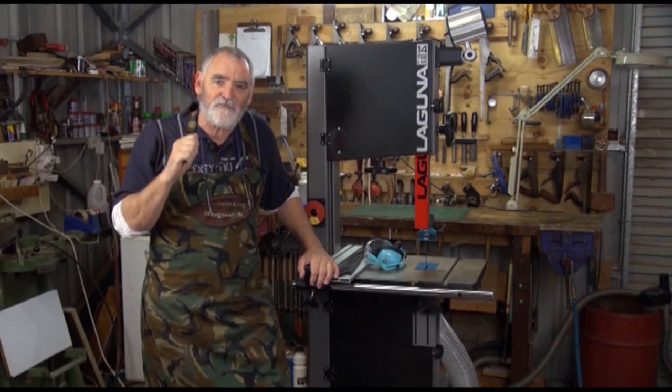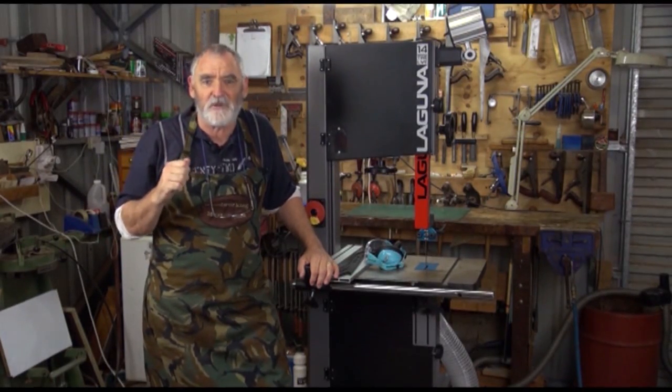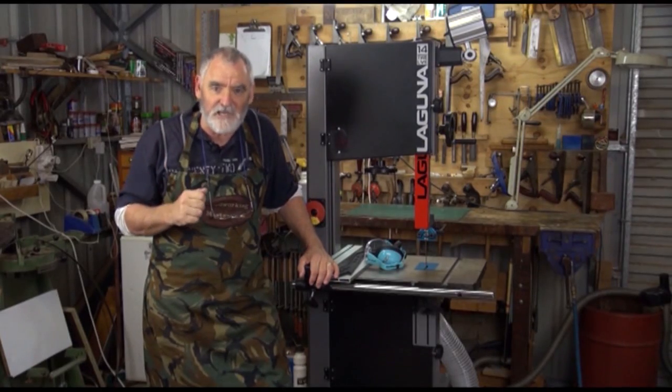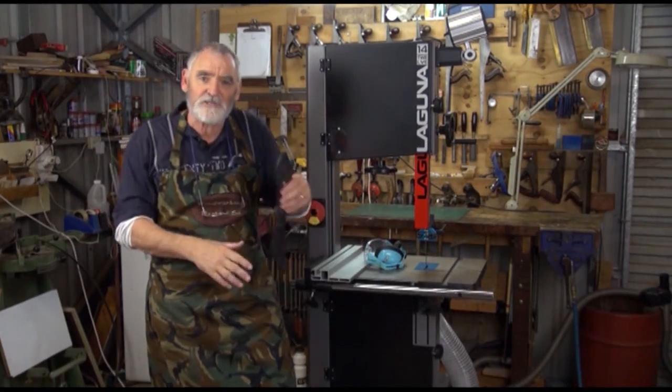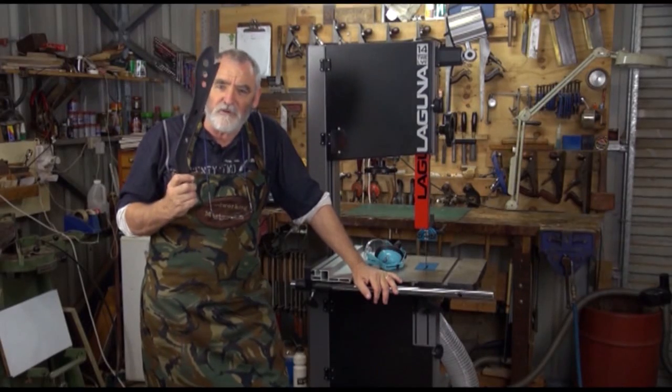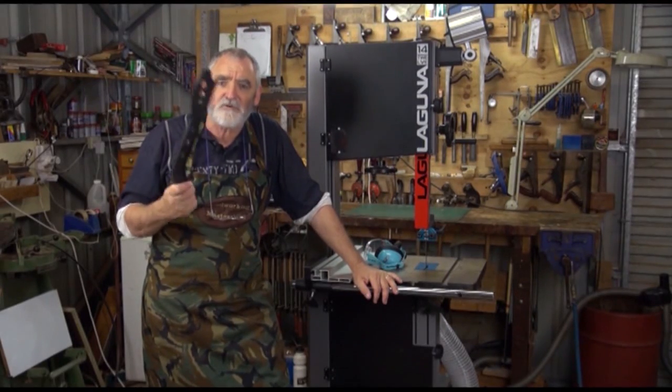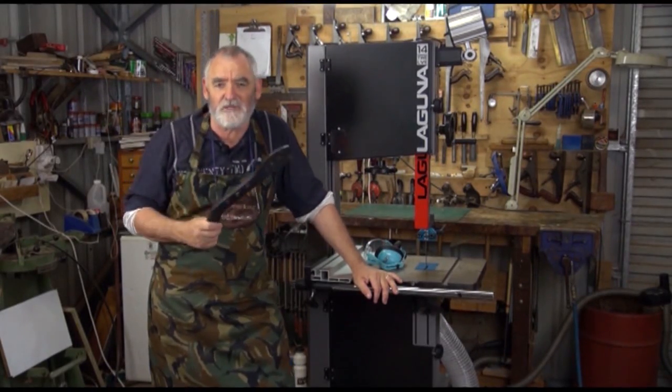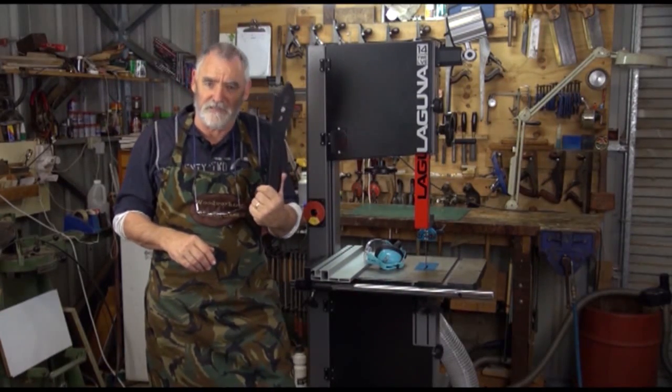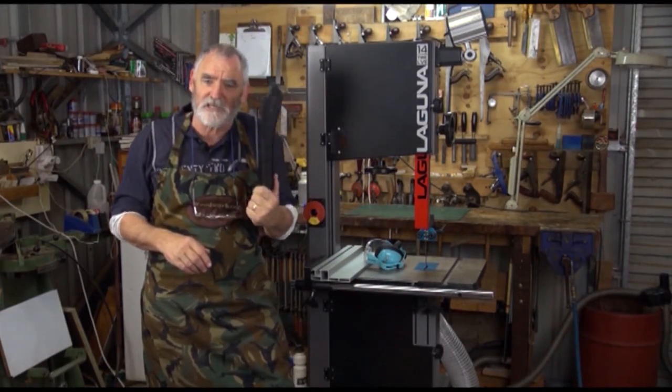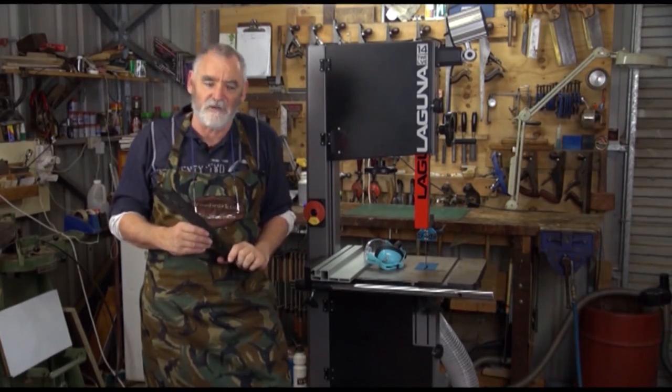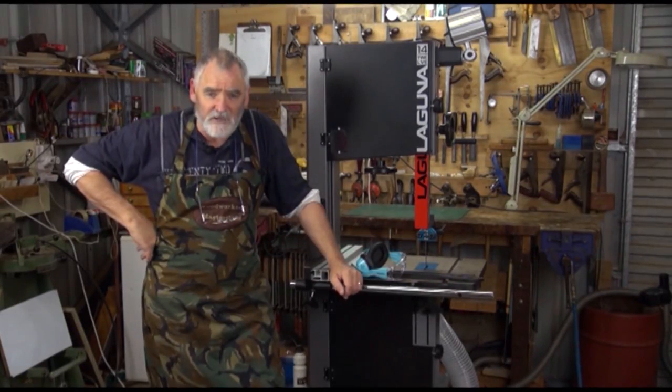But before we start, there's some very rudimentary things you have to do with machinery. And it's to do with safety. First of all, get yourself a push stick. Now, whether you make one from a design of your own or one you get online or you buy one commercially, they are the safest tool in the shop. They save your fingers, they save your jobs, and they save your time. And also get yourself some safety equipment. A good set of earmuffs and a pair of safety glasses.